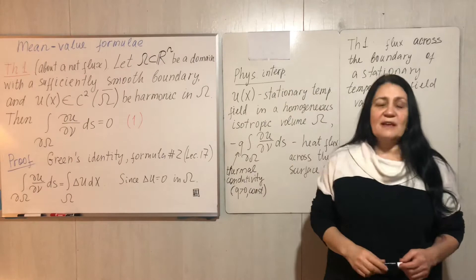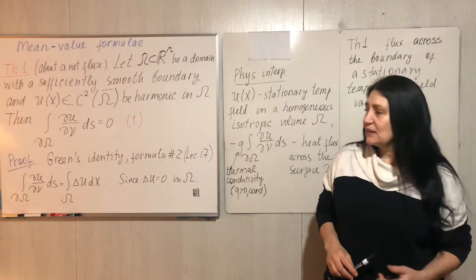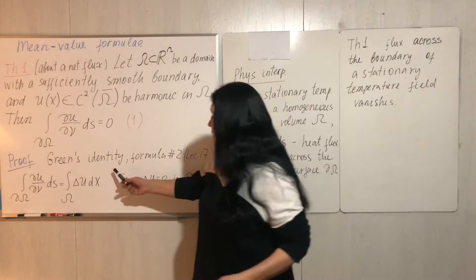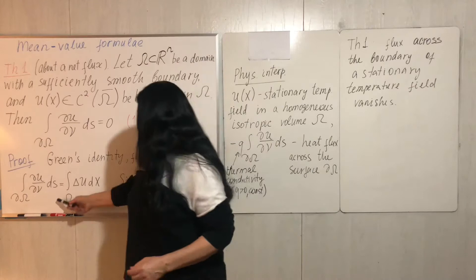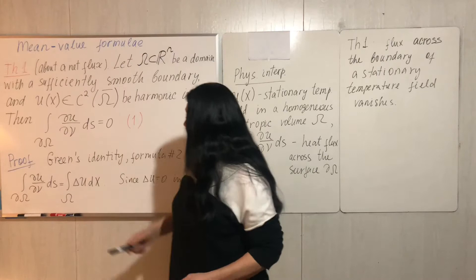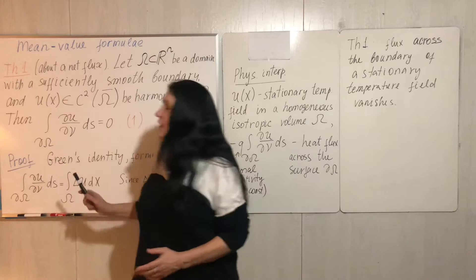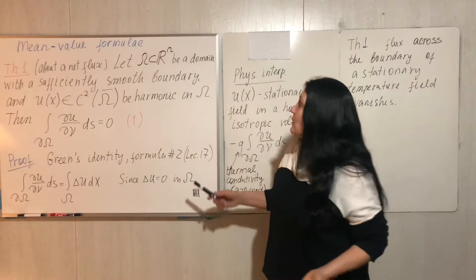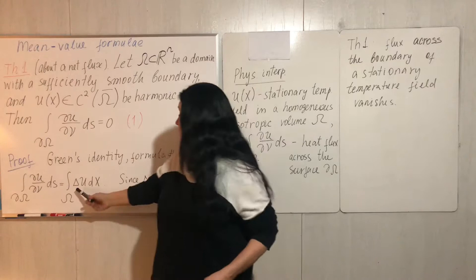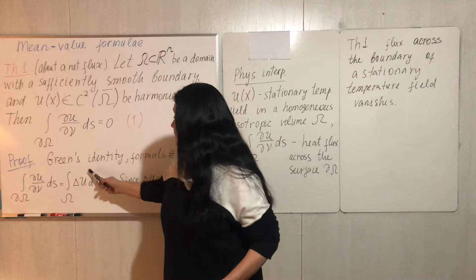This fact follows from one of Green's identities that we discussed in lecture 17, specifically formula number 2. That formula tells us that flux across the boundary equals the integral over the volume of delta u dx, where u is a C² function in omega. Now if u is harmonic, then delta u is zero, so the entire integral is zero, and so the flux integral is also zero.